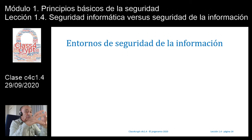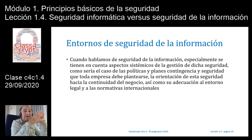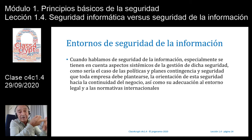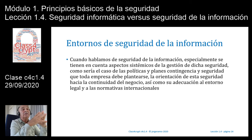Cuando hablamos de seguridad de la información, especialmente se tienen en cuenta aspectos del tipo sistémicos de la gestión de dicha seguridad. Una palabra importante aquí es gestión, como sería el caso de las políticas y planes de contingencia. En la empresa tendré que tener políticas de seguridad, cuadernos de seguridad, cómo manejar las incidencias, un plan de contingencia, un plan de recuperación de desastres —DRP—, un plan de continuidad de negocio, etcétera, para manejar la seguridad dentro de la empresa.